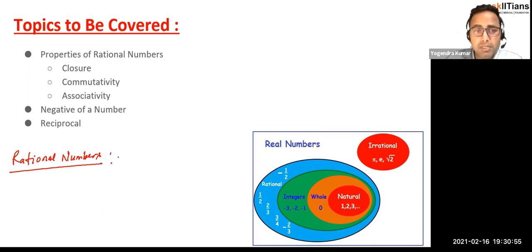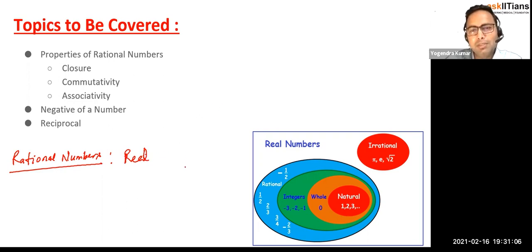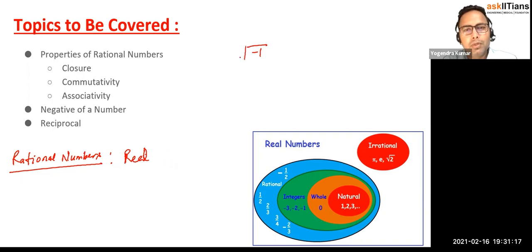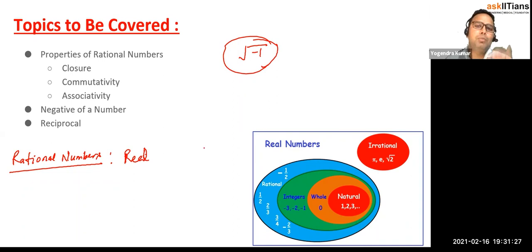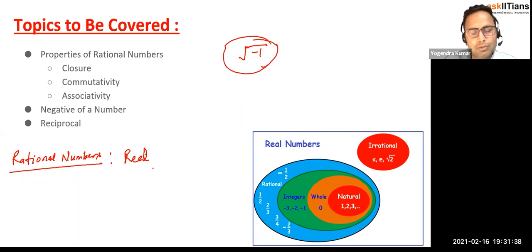Rational numbers are real numbers. By the way, other than real numbers we have imaginary numbers, but right now you need to remember there is no imaginary number until 10th grade — that comes in 11th grade as complex numbers, like the square root of minus one. That is limited to one chapter only. So for now, focus on real numbers.